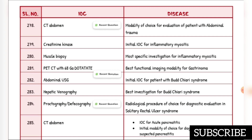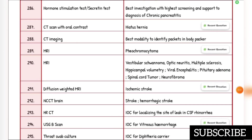Initial modality of choice for diagnosis in suspected chronic pancreatitis is CT abdomen. Best investigation with highest sensitivity to support diagnosis of chronic pancreatitis is hormone stimulation test or secretin test. Hiatus hernia: investigation of choice is CT scan with oral contrast. Best modality to identify pockets in body packer is CT imaging.